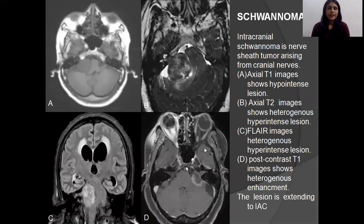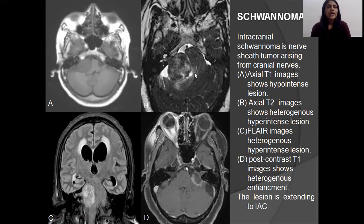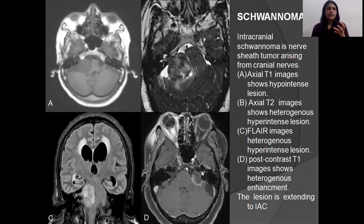Schwannoma is the most common lesion of the CP angle and is a nerve sheath tumor arising from the cranial nerves. On T1 images, as seen in image A, there is a hypointense lesion. On T2 and FLAIR, there is a heterogeneously hyperintense lesion with heterogeneous post-contrast enhancement. It extends into the internal auditory canal, giving it an ice-cream cone appearance, which is a pathognomonic feature for schwannoma.